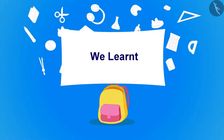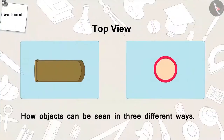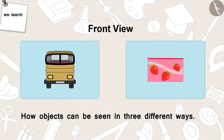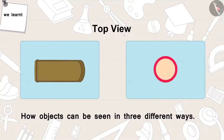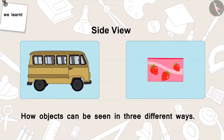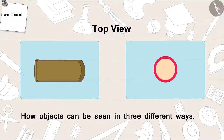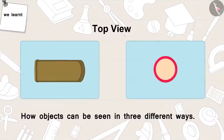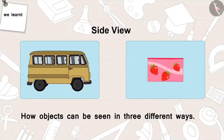Children, in this part we learnt how objects can be seen in three different ways: from above — top view; from front — front view; and the side — side view. In the next video, we will learn more about this with the help of some interesting examples.